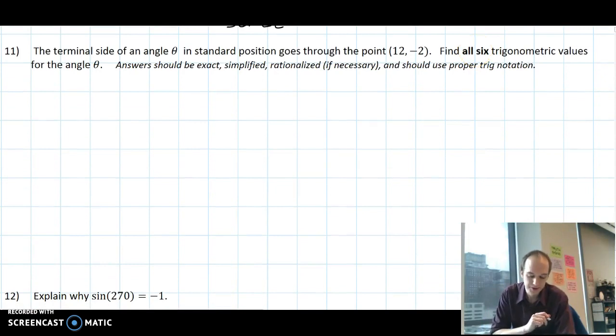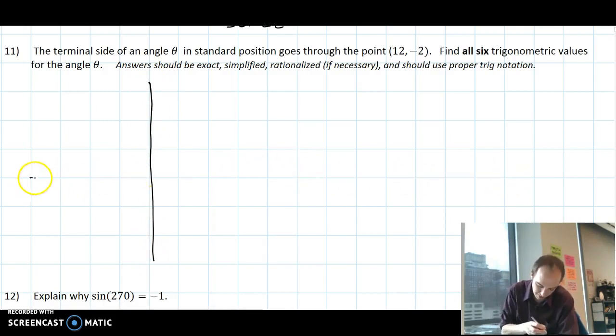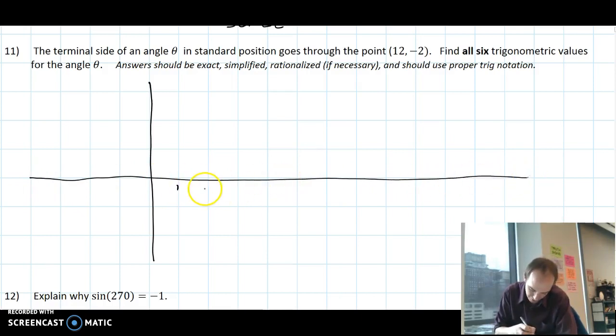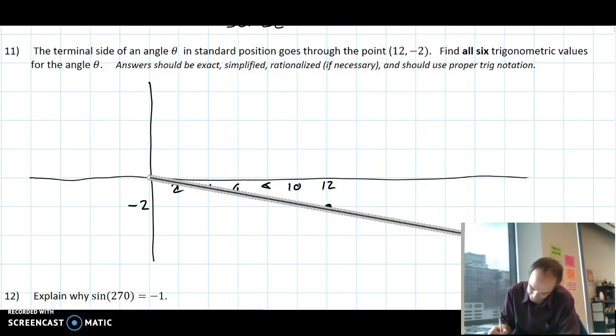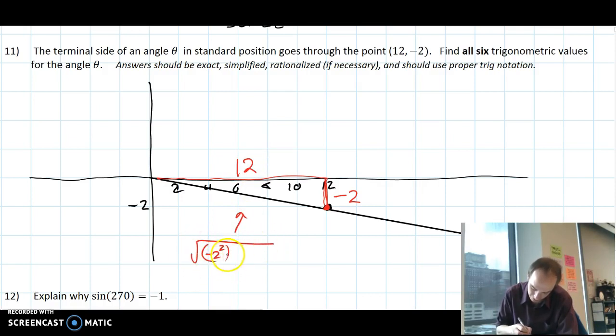Number 11. The terminal side of an angle goes through 12, negative 2. Again, I'm not going to try to draw this out fully to scale, because 12 would be way far out there. Actually, I will. 1, 2, 4, 6, 8, 10, 12, and it's going to be negative 2. So the angle is going to be like right here. I'll draw the whole ray that represents the angle. And then I'm going to use that point to make a triangle. So my triangle has sides of negative 2, has a side of positive 12. And to find this, I have to do the square root of negative 2 squared in parentheses, squared is outside the parentheses, plus 12 squared. So that's going to be the square root of 144 plus 4, or the square root of 148.